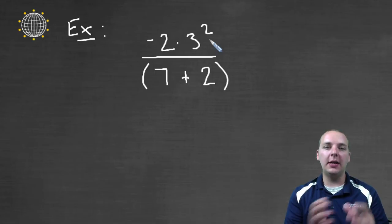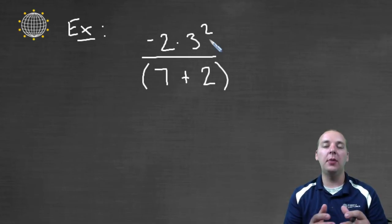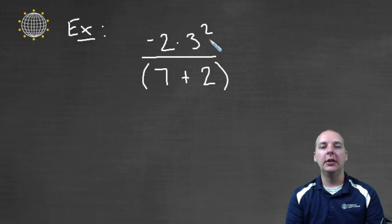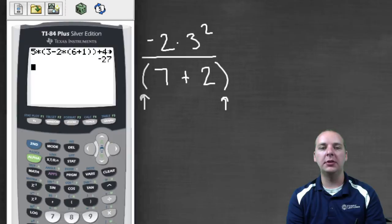But when we take -2 * 3² divided by (7 + 2), I don't mean divided by seven or divided by two, I mean divided by seven plus two. In other words divided by nine. So we have to add in these parenthesis here, even though they're not explicitly written when we write our expression down.